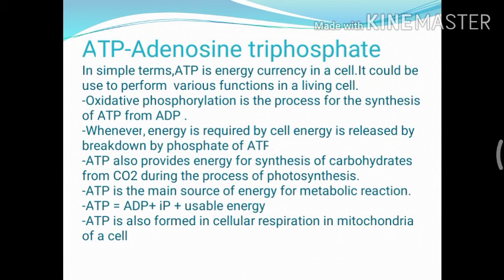Whenever a phosphate molecule of ATP breaks, it provides energy to the cell which is required in various metabolic reactions. ATP provides energy for the synthesis of carbohydrates from CO2 during photosynthesis. Metabolic reactions also involve ATP as the main source of energy. ATP also consists of ADP and inorganic phosphate, and releases usable energy. Even in cellular respiration in mitochondria, ATP is formed.